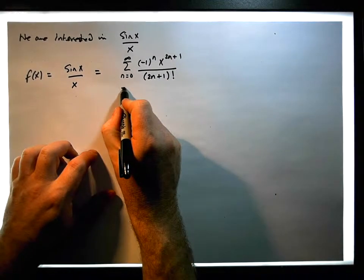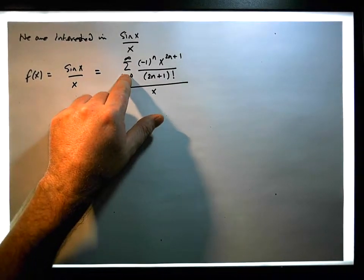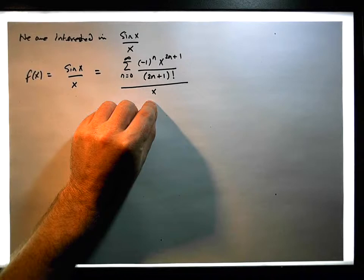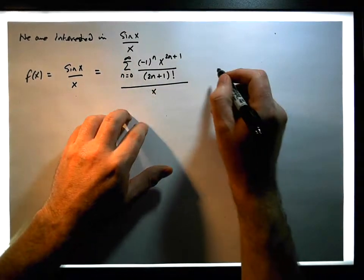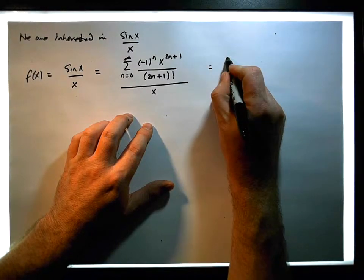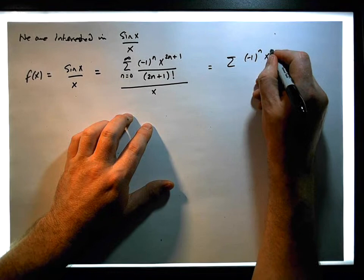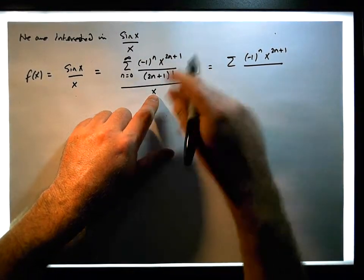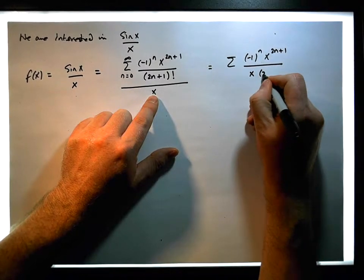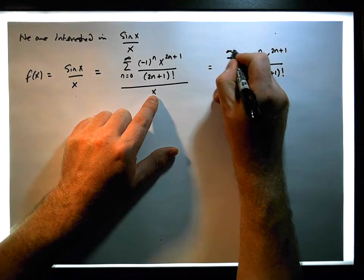So if we divide this now here by x, well, each term here in the summation is effectively going to be divided by x. So when we consider this here, this is now the same as the sum of minus 1 to the n of x to the 2n plus 1, all over x times 2n plus 1 factorial, as n iterates from 0 through to infinity.